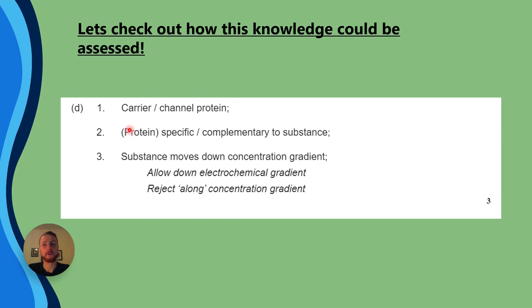Now, for the second mark, we're going to talk about how the protein is specific and complementary to the substance. So, that's why I kind of banged on about it earlier. Because I've read the specification, I've looked at mark schemes, and it tends to come up whenever a protein is being asked about, or at least it does frequently. Now, the third and final mark point is going to be for the substance moving down a concentration gradient. And if you're a year two student, you'll have looked at electrochemical gradients in things like respiration.